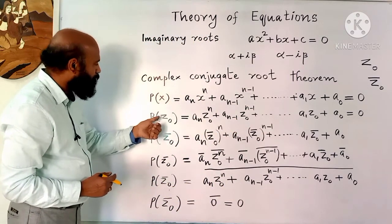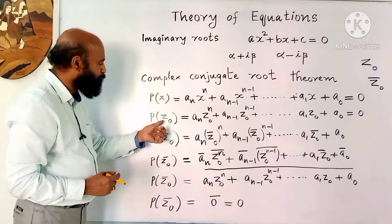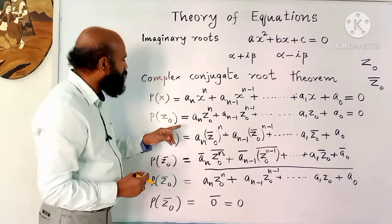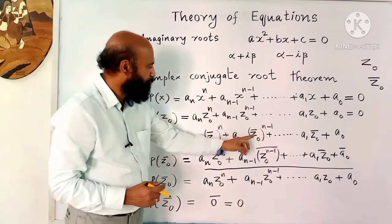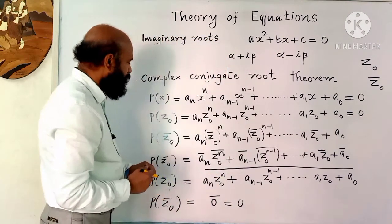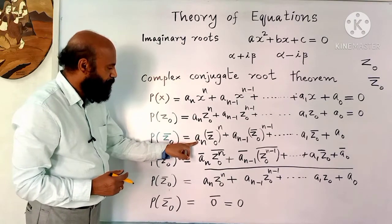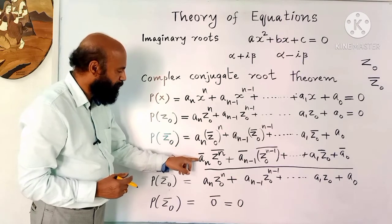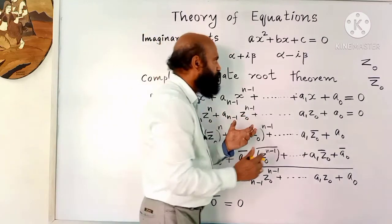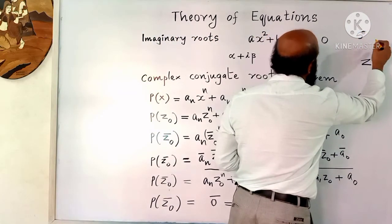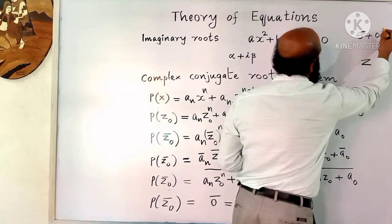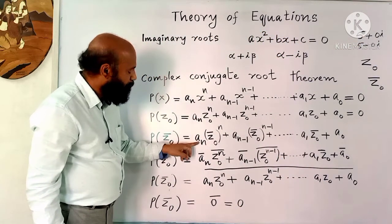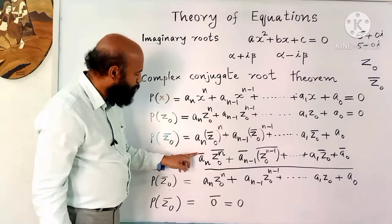Now wherever x appears, write the conjugate of z0, that is z0-bar. Since the coefficients are real numbers, taking the conjugate of a real number produces no change. So a_n can be written as a_n-bar. For example, the conjugate of 5 is still 5, since 5 equals 5 plus 0i, and its conjugate is 5 minus 0i — so there is no change.